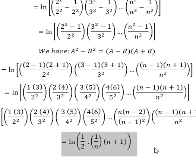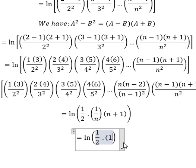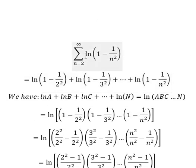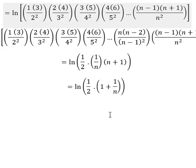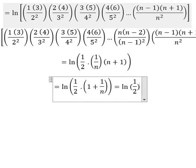So now (n plus 1) divided by n is about one plus one over n. We know that when n approaches positive infinity, this term goes to positive infinity, and one divided by positive infinity gives zero. So we are left with one over two.